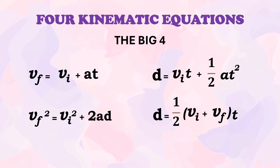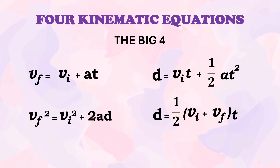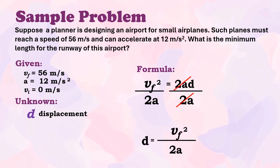Based on the four kinematic equations, we will use: v_f² = v_i² + 2aD. Final velocity, acceleration, and initial velocity are all given. Since initial velocity is 0, the formula simplifies to v_f² = 2aD. To solve for displacement, we divide both sides by 2a, giving: D = v_f² ÷ 2a.